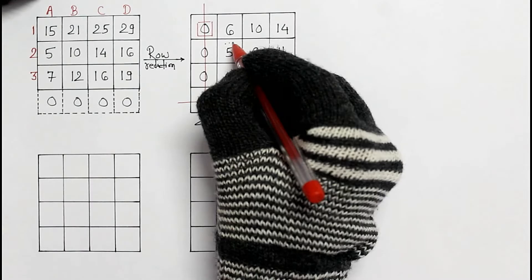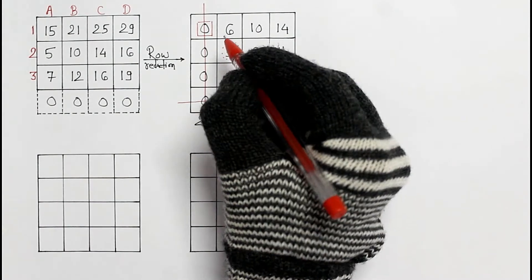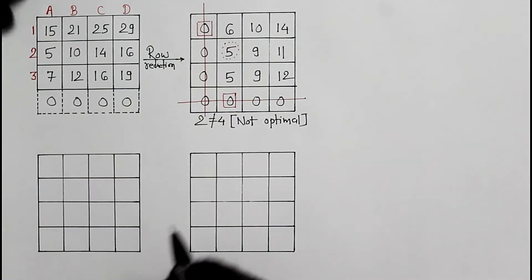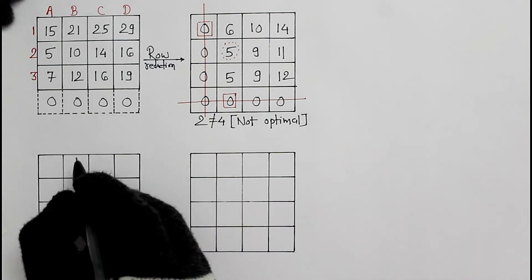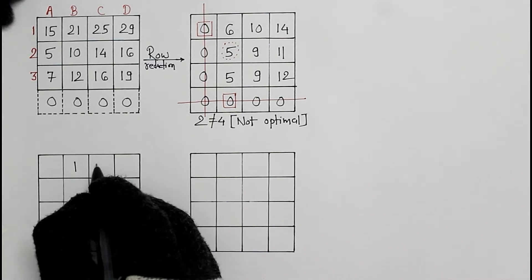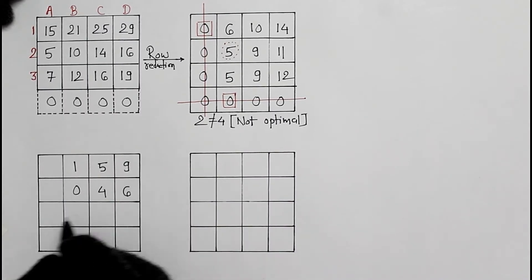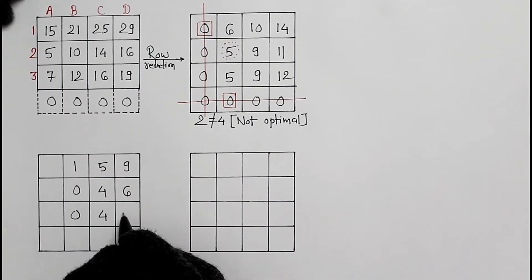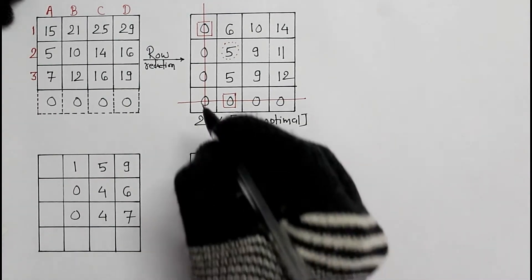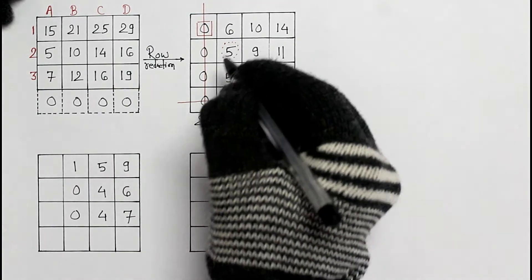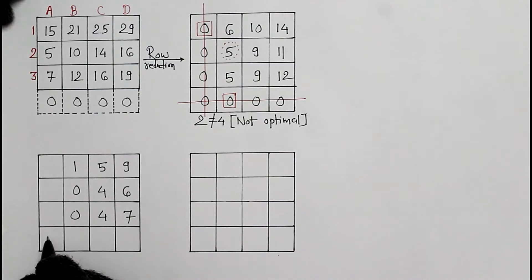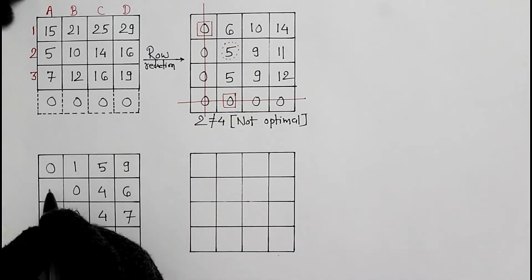5 is the minimum uncovered element. By subtracting from all uncovered elements: 1, 5, 9, 0, 4, 6, 0, 4, 7. This is an intersection point. We should add 5 here, and the remaining elements are the same.